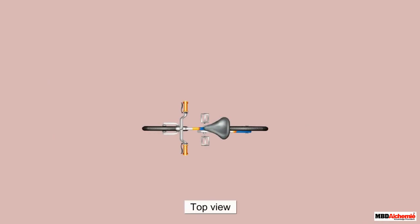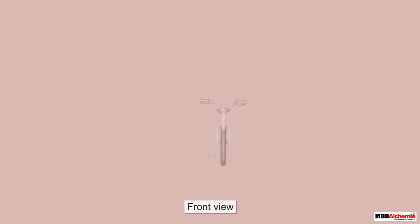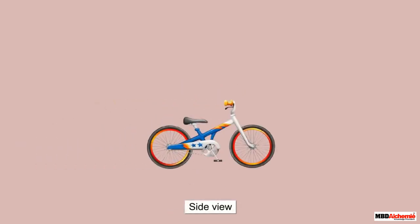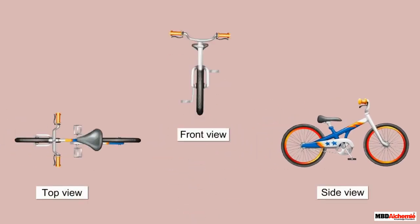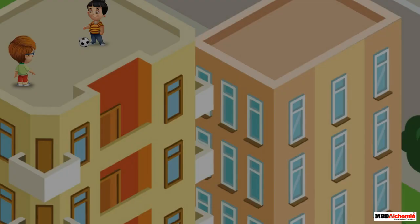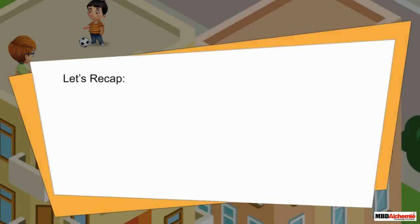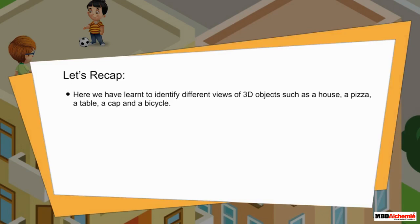Bicycle: top view of a bicycle, front view of a bicycle, side view of a bicycle. These are the three views of a bicycle.